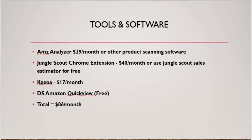Next is DS Amazon Quick View. It's a simple tool that shows you sales rank, FBA sellers, and if Amazon is selling the product, all without even clicking on the product itself. We will go more in-depth on how to actually use these tools later in the course.